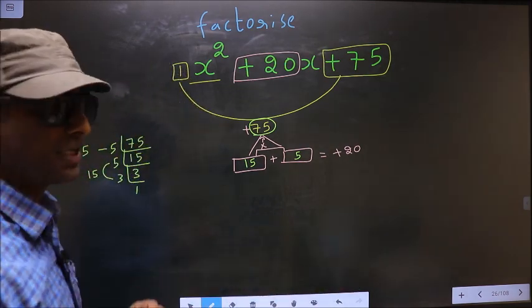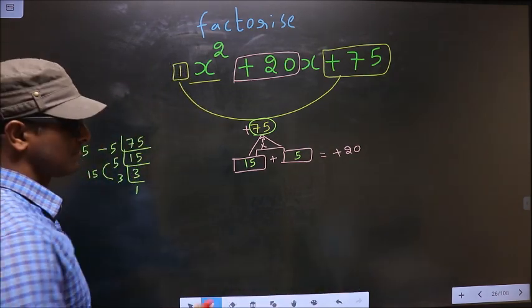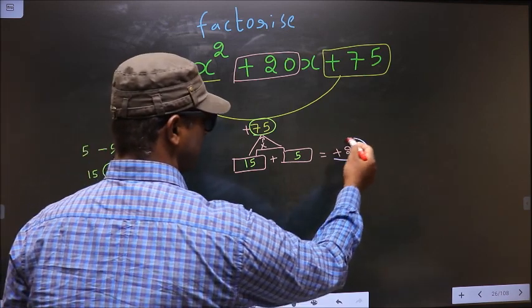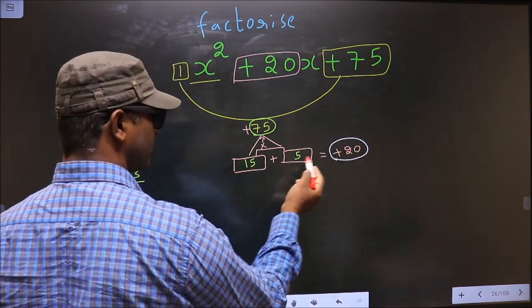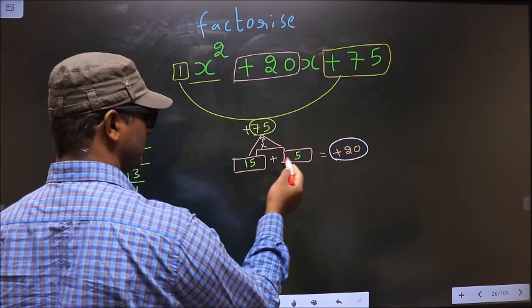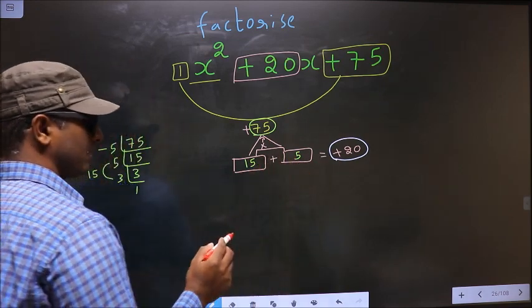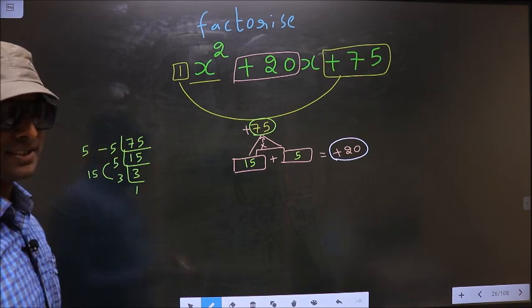15 plus 5. Now we should adjust the signs. Here we should get plus 20. So 15 plus 5 is plus 20. 15 into plus 5 is plus 75. So the signs are adjusted.